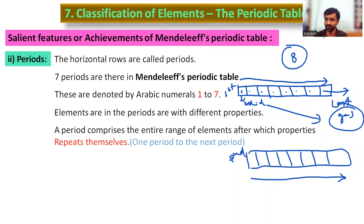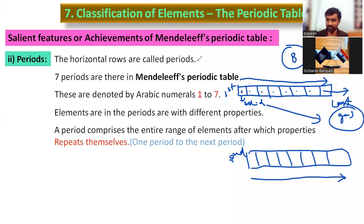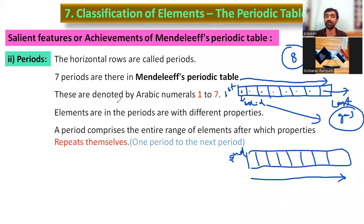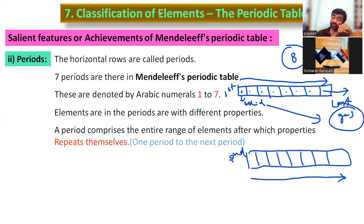Within a period, one element to another is different in characteristic properties. But from one period to the next, similarity is observed. Within the same period there is no similarity; between corresponding positions in different periods, the same characteristic properties repeat.